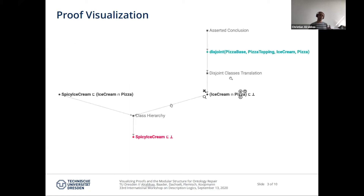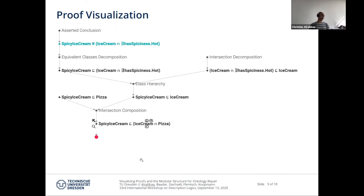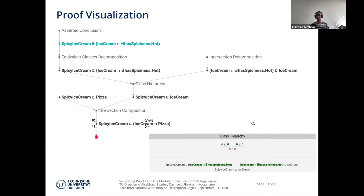Once we've read and understood a part of the proof, we can move to the next axiom. We can also cut a proof and consider a sub-proof in isolation. At any step, if there is any rule application that is not quite clear, we can press on the name of the rule and see a more detailed explanation of the abstract rule and how it was applied in the current instance of it in the proof.